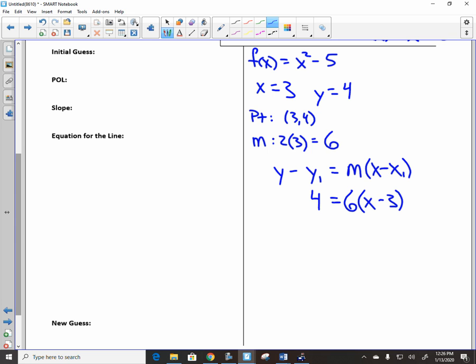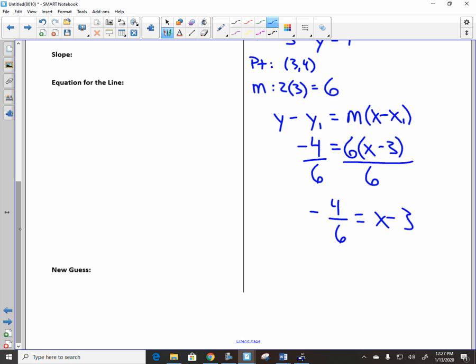x-intercepts happen when the y-value is 0. So you just end up with -4. That's our equation. If we solve for x, we get the x-intercept. How do you solve for x? I could distribute the 6. Instead, I'm going to divide by 6. So I have -4 over 6, and it equals x minus 3. Then what would you do to both sides? Add 3.